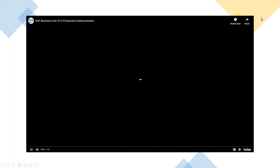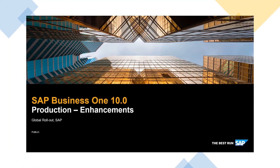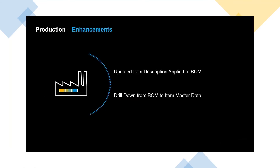Now we'll take a look at those examples. SAP Business One 10.0 Production Enhancements. We would like to introduce a couple of enhancements in production: the possibility to apply the item description update to the bill of materials, and to drill down from bill of materials to item master data directly.